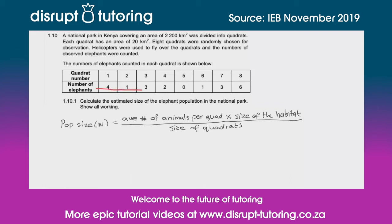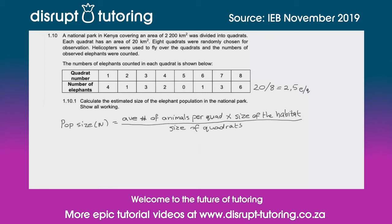If we add up all of these numbers we get a total of 20 elephants and we have 8 quadrats. So 20 divided by 8 to get our average gives us 2.5 elephants per quadrat.